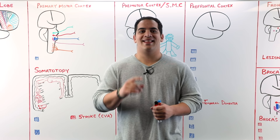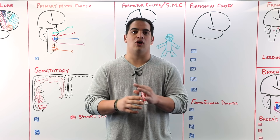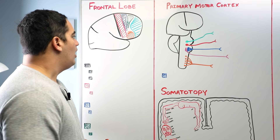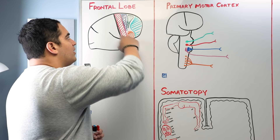Alright Ninja Nerds, in this video today we are going to talk about the cerebral cortex, but we're going to primarily focus on the frontal lobe — all the basic functional anatomy of the frontal lobe. So let's go ahead and get started. What I want us to first do is cover the basic functional anatomy and then talk about the basic functions of these different areas located within the frontal lobe.